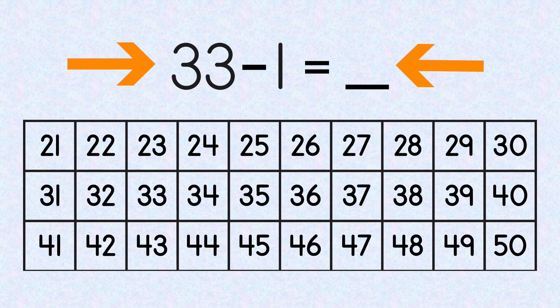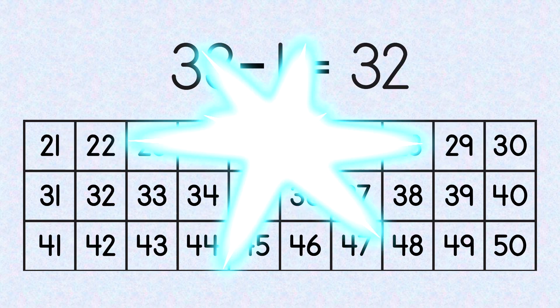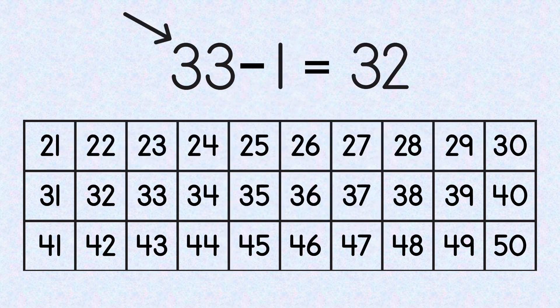33 minus 1 equals blank. Find 33 on the hundreds chart, move to the left one block, we end up on 32. So 33 minus 1 equals 32.